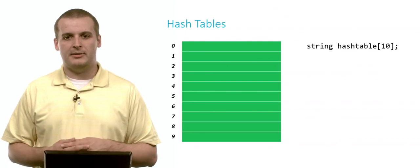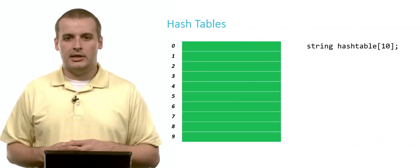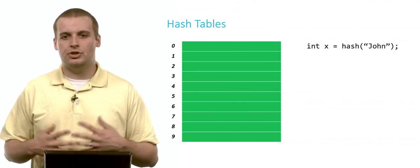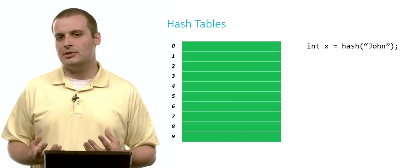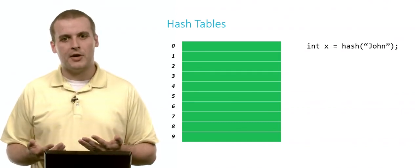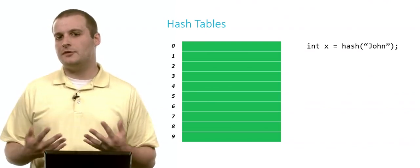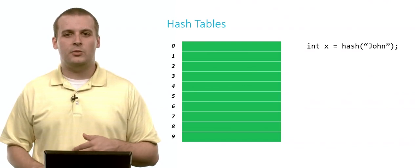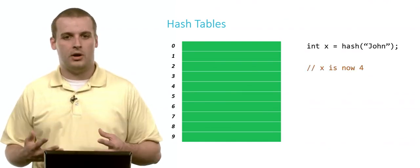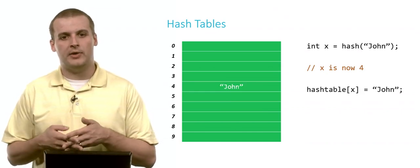So for example, we have maybe this hash table of strings. It's got 10 elements in it, so we can fit 10 strings in it. Let's say we want to hash John. So John is the data we want to insert into this hash table somewhere. Where do we put it? Well, typically with an array so far, we probably would just put it in array location 0. But now we have this new hash function. And let's say that we run John through this hash function, and it spits out 4. Well, that's where we're going to want to put John.